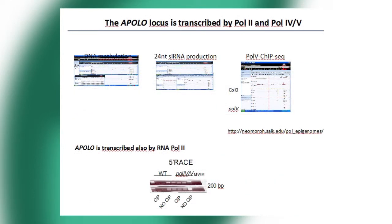Looking at another genome browser, we see that this methylation and 24-nucleotide siRNA production correlates with a ChIP-seq analysis of Pol V. Everything makes sense: this locus is recognized by Pol IV and Pol V, produces 24-nucleotide siRNAs, and is heterochromatin. At the same time, we detect a long RNA. We took a double mutant of Pol IV and Pol V, abolishing the methylation pathway, and by performing 5' RACE, we could still detect a capped transcript from this locus — so it is not only Pol IV and Pol V recognizing this locus, but also Pol II.